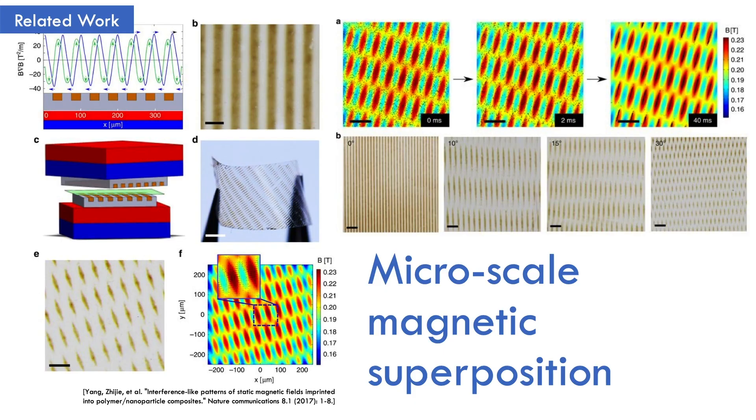For this problem, this previous study showed that an interference-like magnetic superposition can be generated by layering microscale magnetic patterned films. So we applied this magnetic superposition approach to the millimeter-scale magnetic rubber sheets.